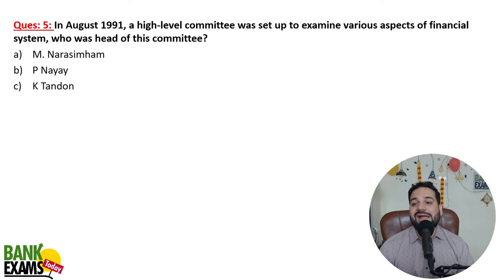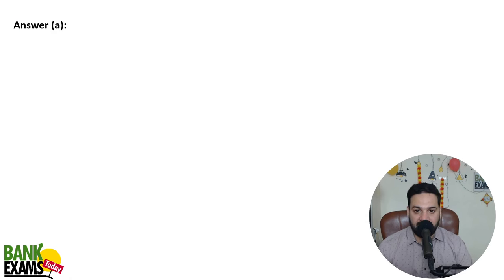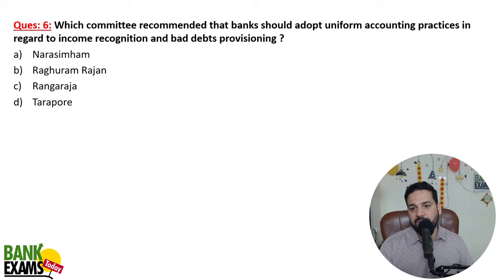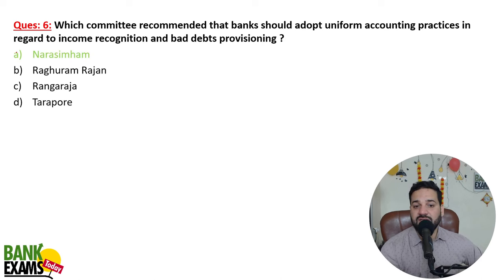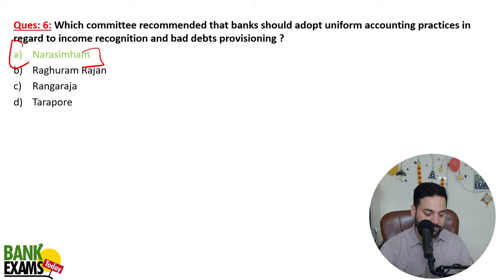In 1991, a high-level committee was set up to examine various aspects of the financial system. M. Narasimham was the head of this committee. The Narasimham Committee recommended that banks should adopt a uniform accounting practice in regard to income recognition and bad debt provisions.